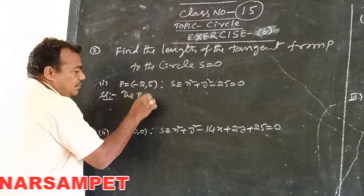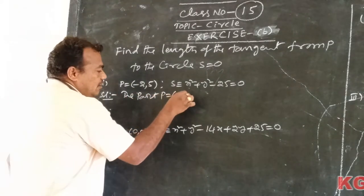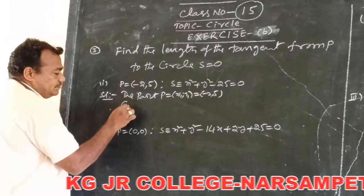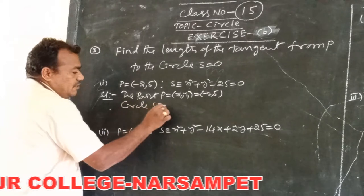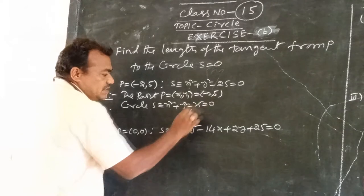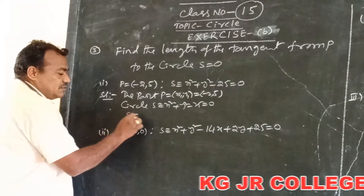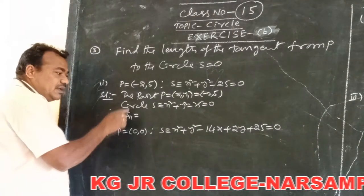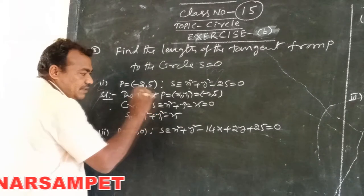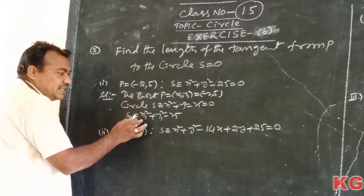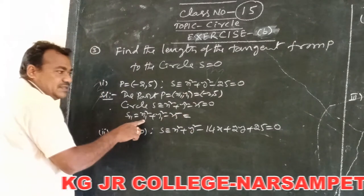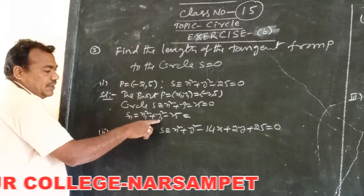The given point P is equal to (x₁, y₁) = (-2, 5). And the circle S is equal to x² + y² - 25 = 0. Now we have to find out S₁₁. S₁₁ of the circle is x₁² + y₁² - 25. Here x₁ = -2, y₁ = 5.